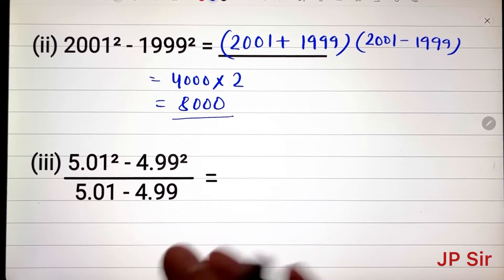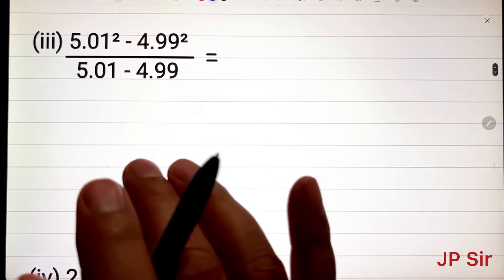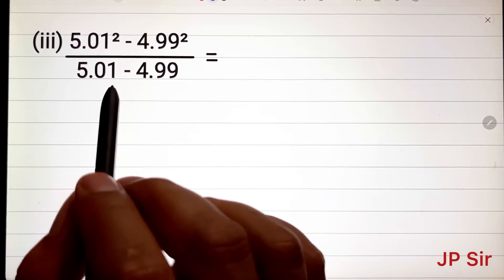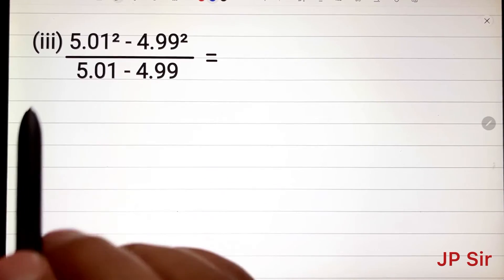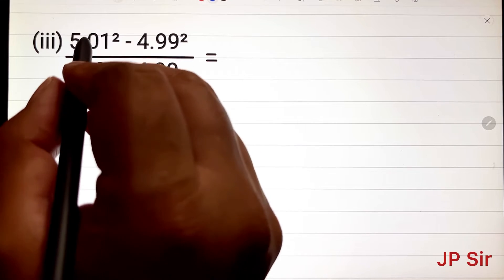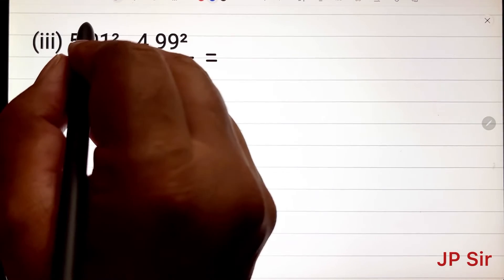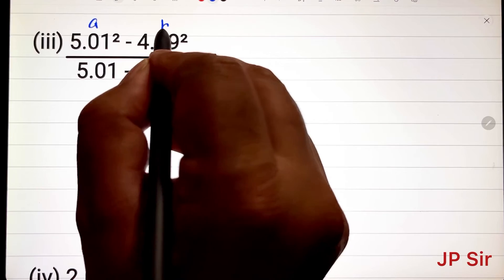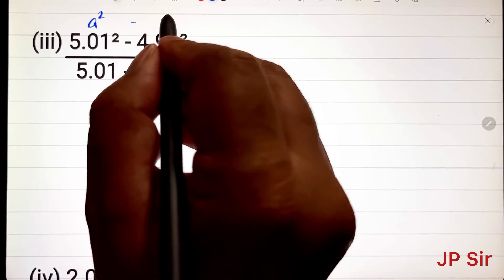What if we have these kind of questions? It looks very terrifying, but it's actually not a difficult question. Now we need to apply the identity that we have just learned. Consider this a and this b.